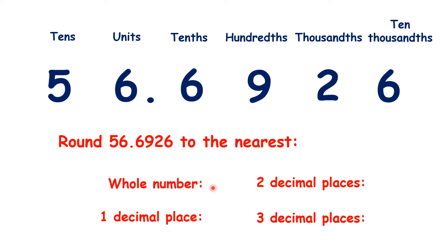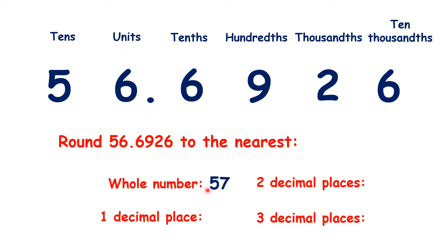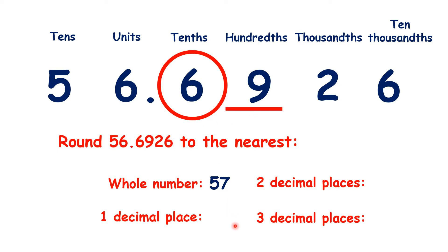For the nearest whole number, we find our units, look across, and we can see that we need to round up, so we have 57. For one decimal place, we find our tenths, look across, and we need to round up, so that's one more in the tenths, giving us 56.7. And it's 56.7, not 57.7, because remember, digits to the left of what we're rounding to always stay the same.